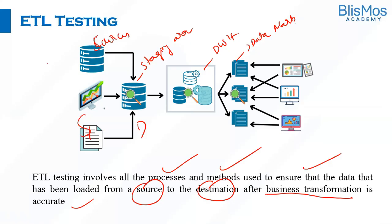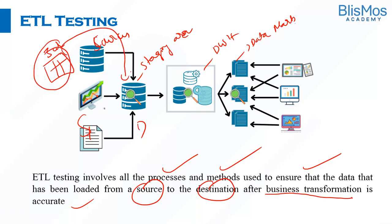Assuming that you are trying to move a table with three columns into the target — the target being the staging area — we need to ensure whether the whole of this data has been moved or not. We also need to ensure that whatever business transformation was proposed as part of the project is taken care of. ETL testing involves all those processes and methods to ensure data loading is accurate after the business transformation.